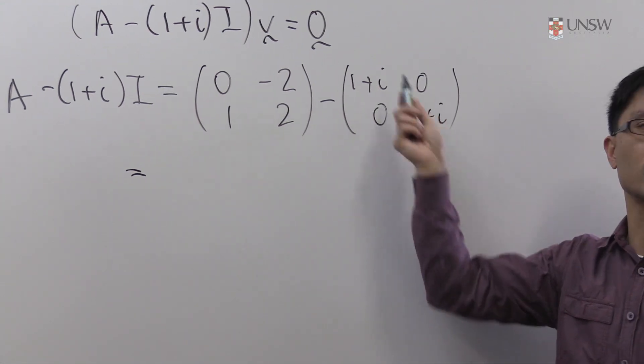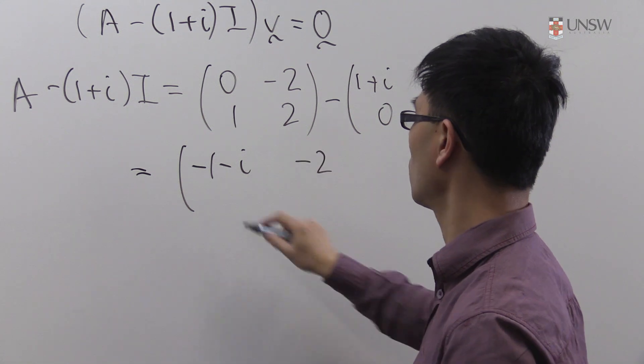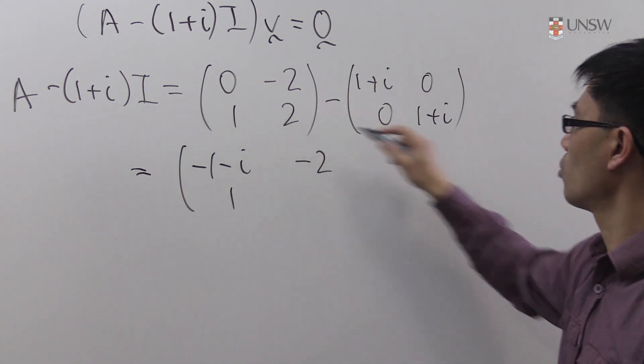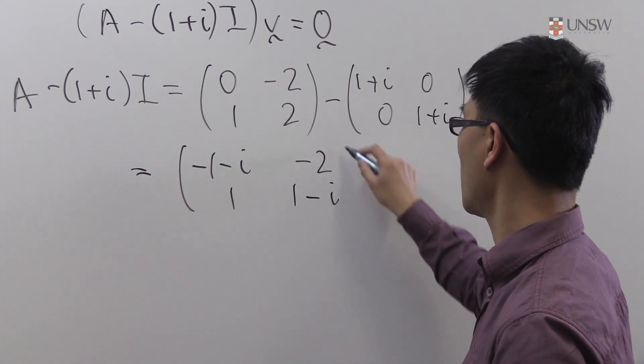So you're just subtracting 1 plus i off the diagonal entries. So you have minus 1 minus i here, minus 2, 1, and then it's 2 minus this eigenvalue. So 2 minus 1 is 1 minus i.